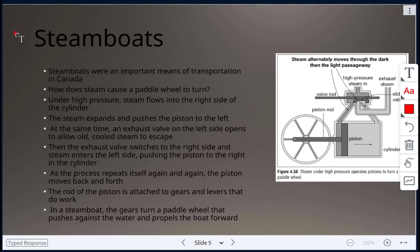That can be then used to do the work. Here in steamboats, they were an important means of transportation in Canada. Basically what's happening is under high pressure, steam will flow into the right side of the cylinder. The steam expands and it'll push the piston to the left. At the same time, there's an exhaust valve on the left side which will open, allowing the old cooled steam to escape. Then the exhaust valve switches to the right side. Steam will then enter the left side and push the piston to the right side in the cylinder. That will repeat itself again and again. The piston will keep moving back and forth.